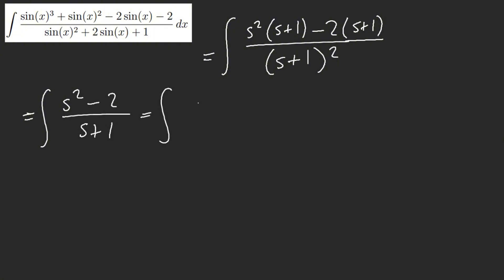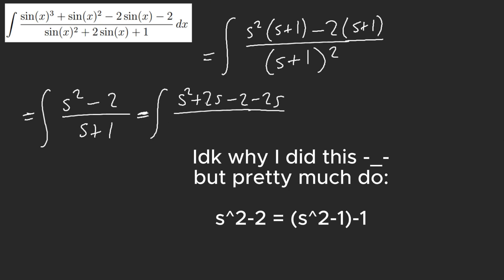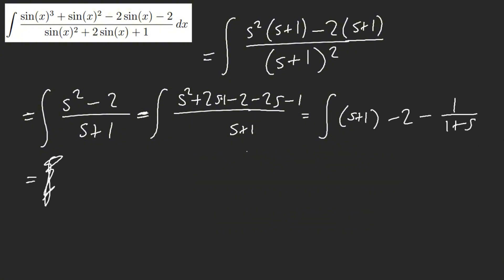So we have s squared minus 2 over s plus 1. We're left with s squared minus 2. What do we do here? We already know that we have our answer.